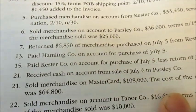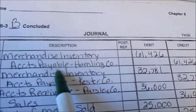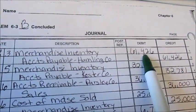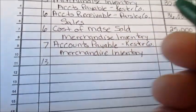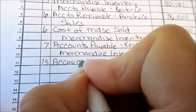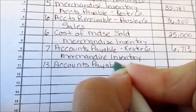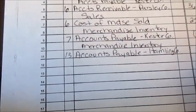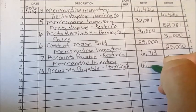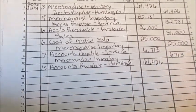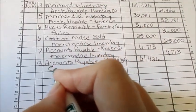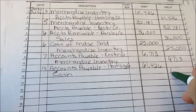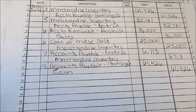On the 13th, we paid Hamling Company on account for the purchase of July 3rd. Looking up at July 3rd, that was $61,426, and we are paying within the 10 days. Date: the 13th. We no longer owe that amount, so debit Accounts Payable — Hamling Company — for $61,426. Since we are paying them, we credit Cash for $61,426.